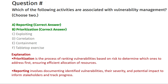The correct answers are Option A, Reporting, and Option B, Prioritization. Prioritization is the process of ranking vulnerabilities based on risk to determine which ones to address first, ensuring efficient allocation of resources. Reporting involves documenting identified vulnerabilities, their severity, and potential impact to inform stakeholders and track progress.